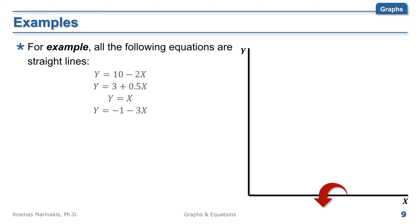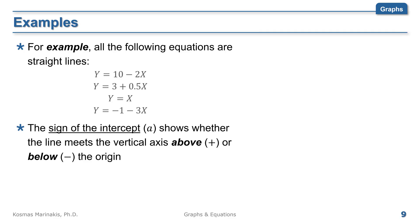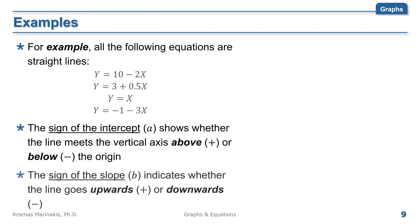In general, the sign of the intercept shows whether the line meets the vertical axis above or below the origin, while the sign of the slope indicates whether the line goes upwards or downwards.